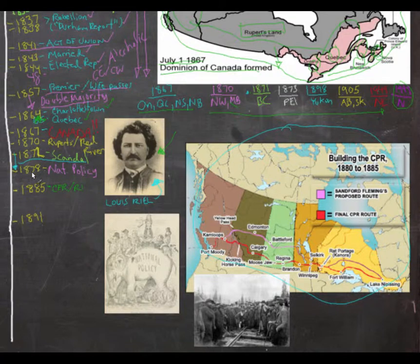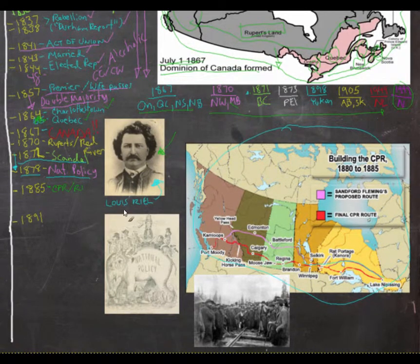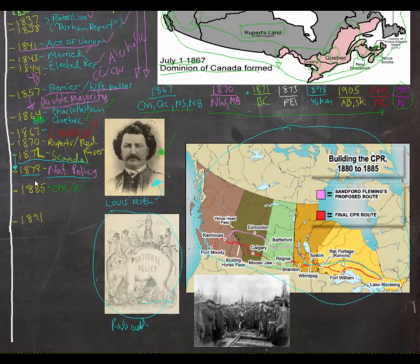In 1878, MacDonald again ran with the Conservatives under something known as the National Policy. The National Policy — illustrated by a cartoon of an elephant trampling over Liberals — promised to protect Canadian industries, promote agriculture, and get the railroad done. These promises were enough to get the Conservatives back into office, and MacDonald would again be Prime Minister from 1878 until his death in 1891.